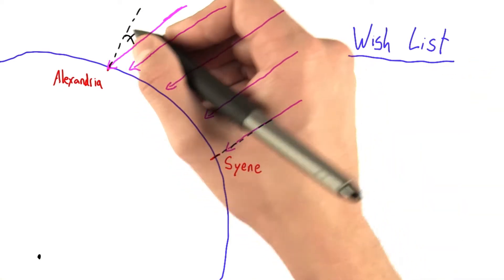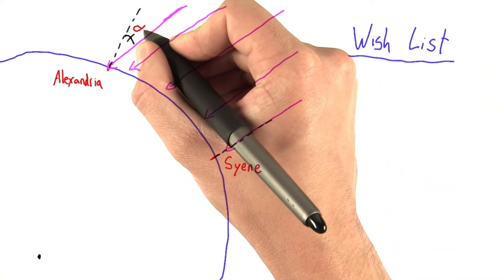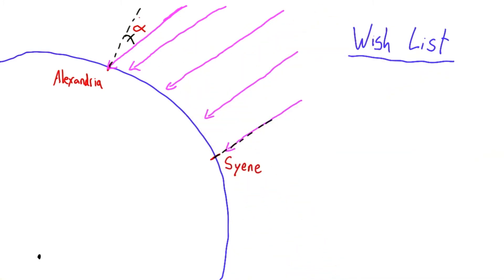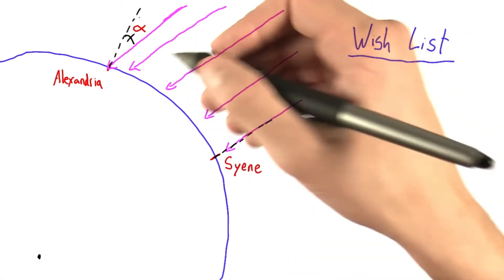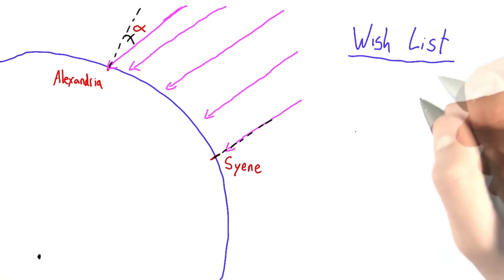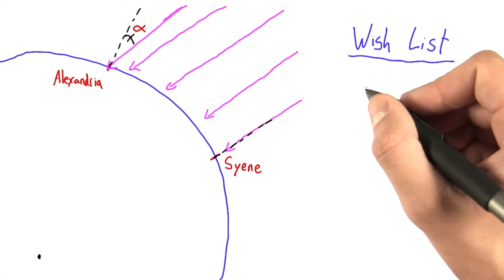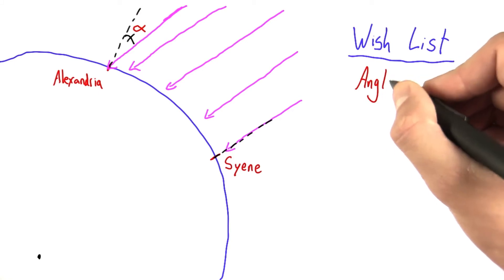So I wish I knew this angle, and I'm going to call it the Greek letter alpha. We're dealing with the Greeks, why not use a Greek letter, and it's pretty common to call angles alpha in physics. So on my wish list, I wish I had that angle, the angle alpha.